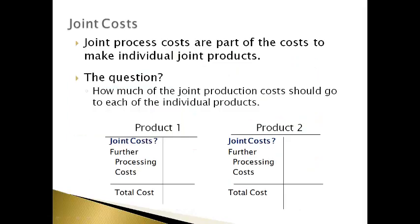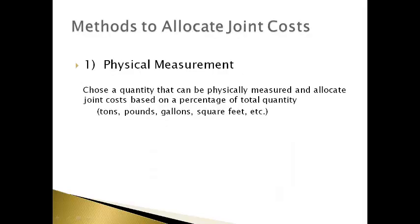Joint process costs have to be incurred first before the further processing costs can be incurred to make the different products. Further processing costs are specific to each product. Joint costs must be allocated to each individual product because it is impossible to tell how much was incurred for each product. The question that must be answered by the accountant is how much of the joint process cost should be allocated to each product. The allocated joint cost plus the further processing cost is the total cost to produce each product.